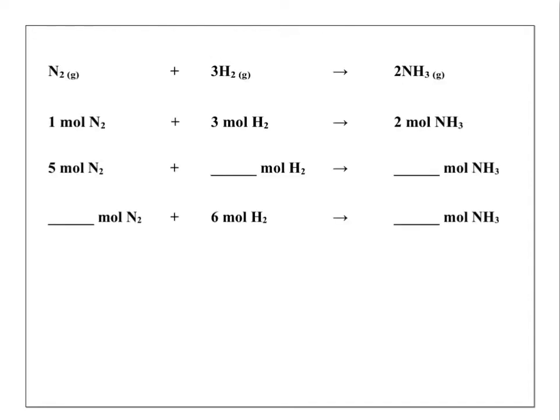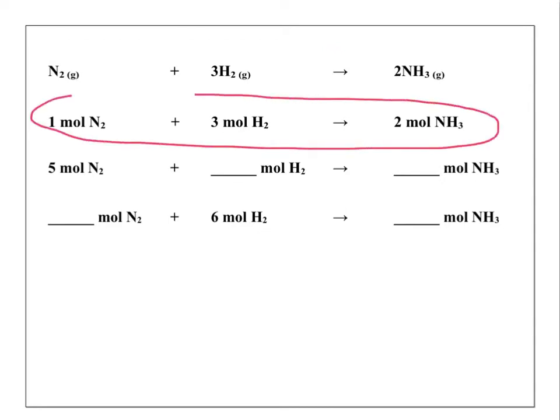The quantity that we're going to look at specifically is the mole. The mole is what we use in chemistry to talk about quantity. The coefficients in the balanced chemical equation can represent a mole ratio. In this equation, one mole of nitrogen is to three moles of hydrogen is to two moles of ammonia. Stoichiometry looks at the relationships between quantities of reactants and products by using this idea of a mole ratio.